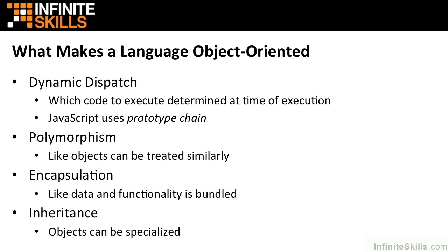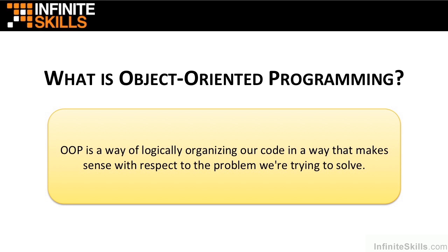Before we dive into each of these terms in detail, let's consider a layperson's definition of object oriented programming. Once we have that, it'll be easier to discuss these features. Object oriented programming is a way of logically organizing your code in a way that makes sense with respect to the problem we're trying to solve. At the heart of object oriented programming is the concept of an object.